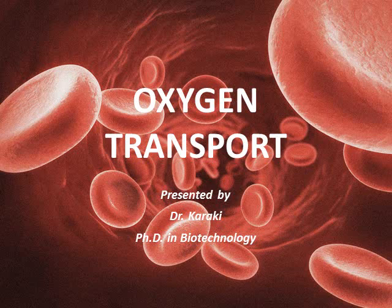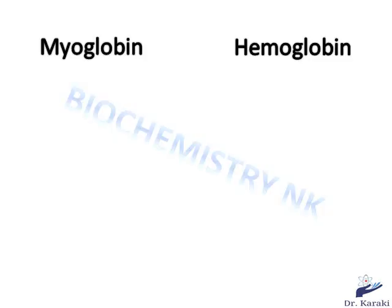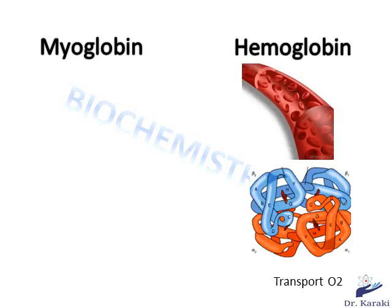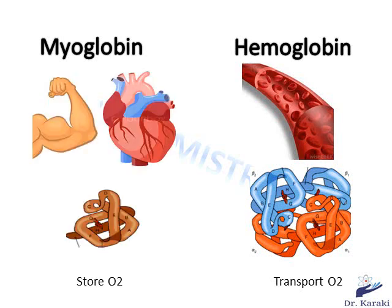In this video we will talk about oxygen transport. Myoglobin and hemoglobin are oxygen-binding proteins. Hemoglobin is found exclusively in red blood cells, where it facilitates the transport of oxygen and carbon dioxide between lungs and peripheral tissues. Myoglobin is abundant in skeletal and cardiac muscles and serves to store oxygen.